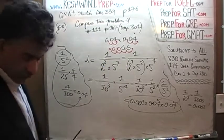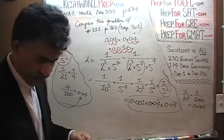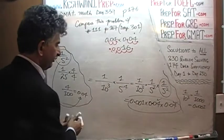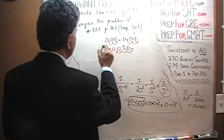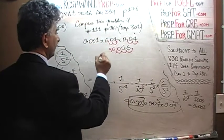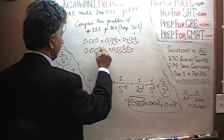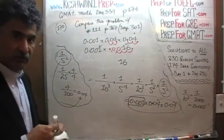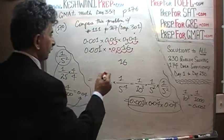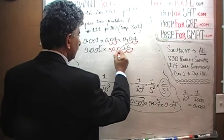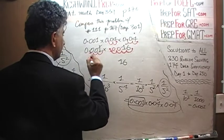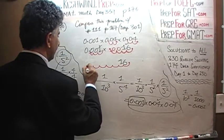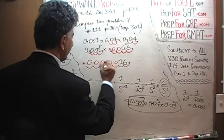We move the decimal seven places in 16, giving us 0.0000016. Counting carefully: one, two, three, four, five — that is our final answer. D = 0.0000016.